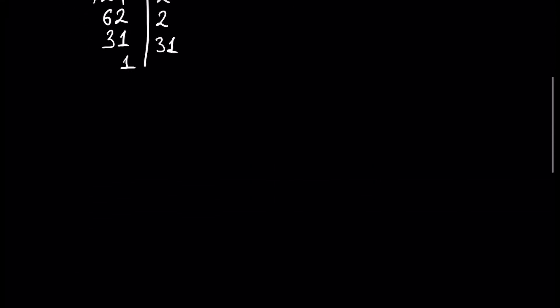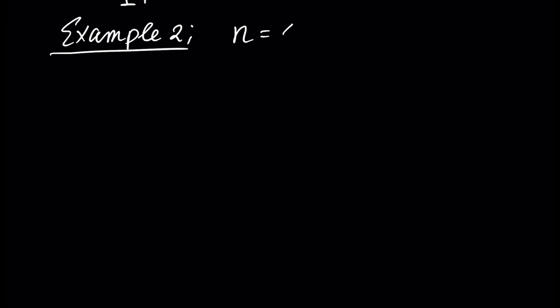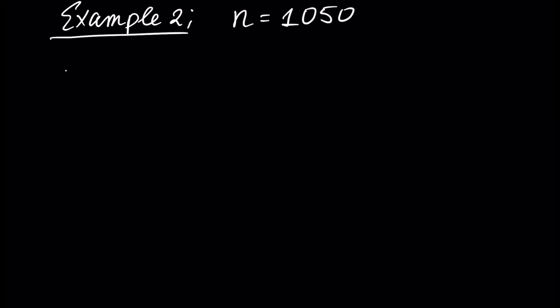Next example — Example 2: writing number 1050 as a multiplication of prime numbers. Let's write 1050. This number is obviously divisible by 2, because the last digit is 0. If you don't know the divisibility criteria for numbers 2, 3, 4, 5, 6, 7, and 9, watch previous tutorials. If we divide 1050 by 2 we will have 525.